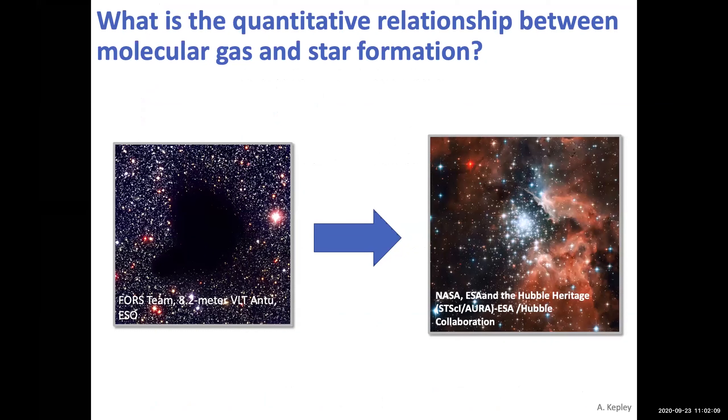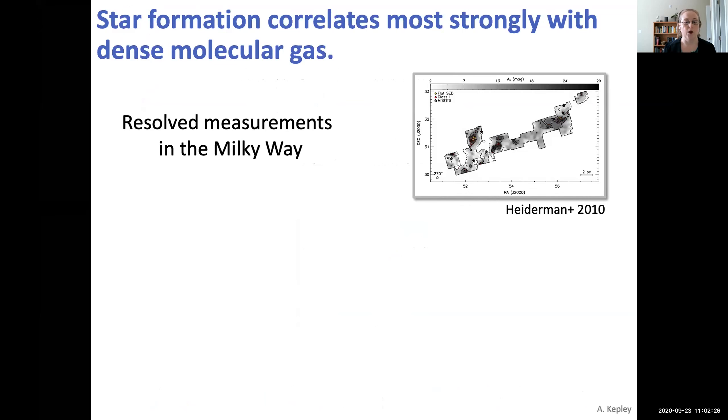So the basic science question we're getting at is, what is the quantitative relationship between molecular gas and star formation? And what we know is that star formation correlates most strongly with dense molecular gas. We know this from resolved measurements in the Milky Way. And this is just an image from Heidermann 2010, showing where there's high extinction, so presumably a lot of dense molecular gas, you have a lot of young stellar objects.